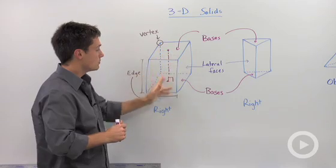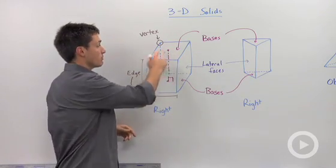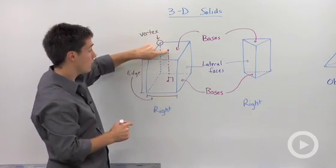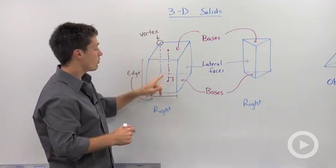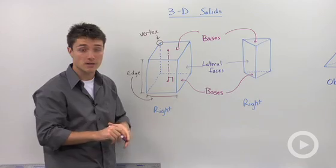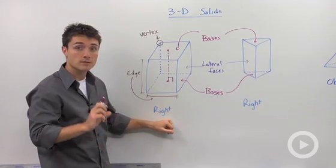If you drew a perpendicular segment, if you just picked a certain point on this prism on one base, you drew a perpendicular segment to the other base. If that point intersects in the exact same spot on the corresponding base, then you have a right prism.